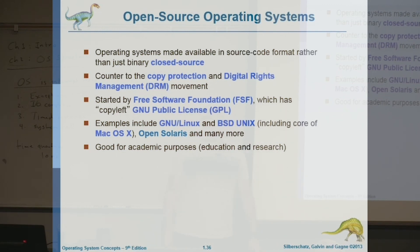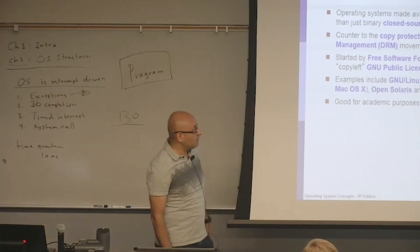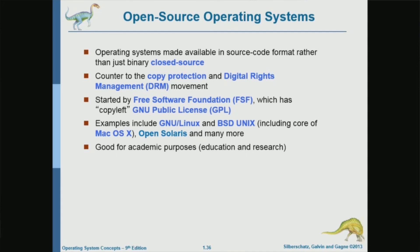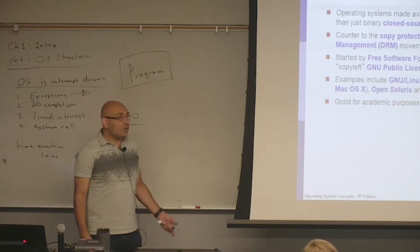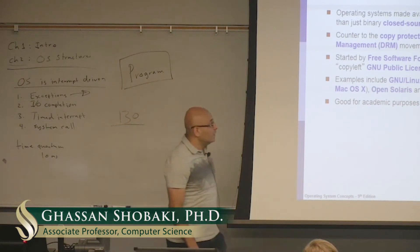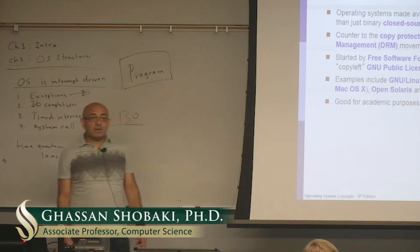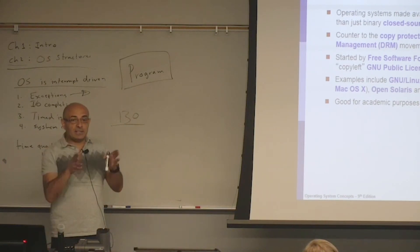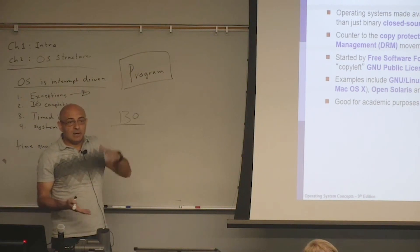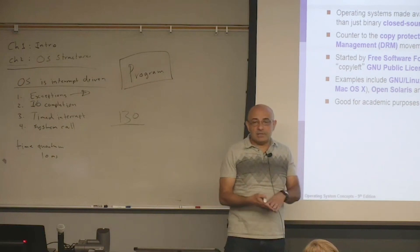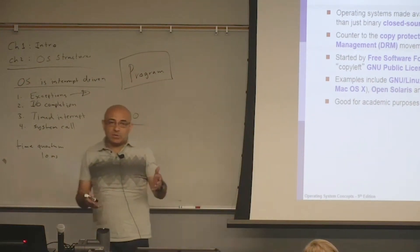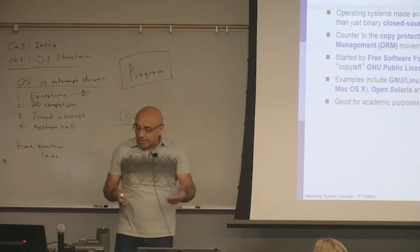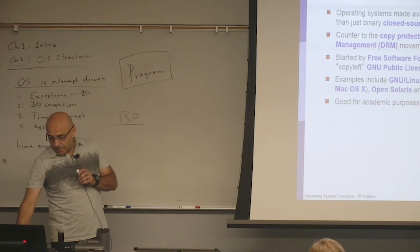Some operating systems are open source, meaning we have access to the actual source code and can, in theory, modify and customize the operating system — if you have the expertise to modify a kernel. With a closed source operating system like Windows, you only get the executable, binaries, dynamic link libraries, and so on — you do not get the source code.